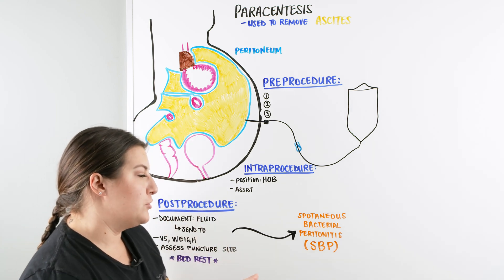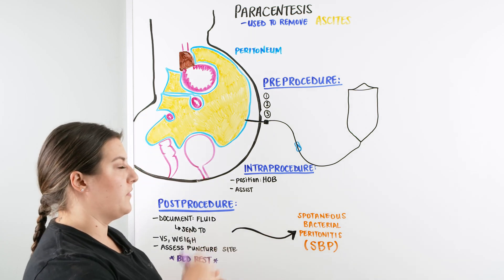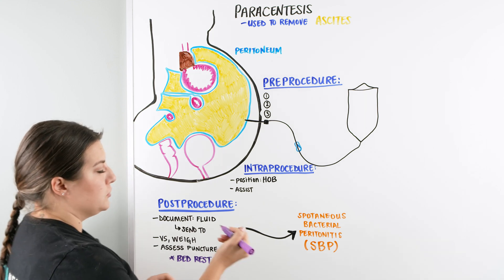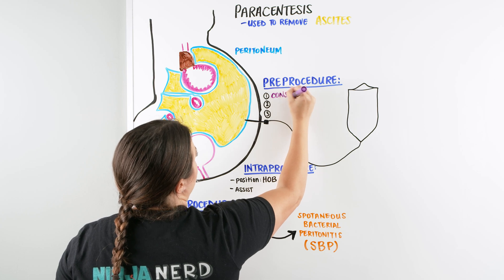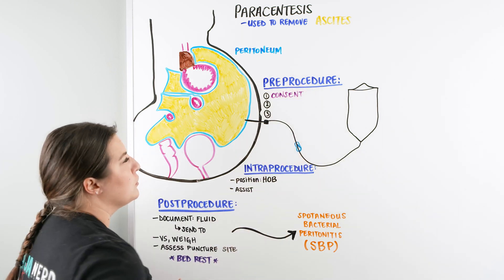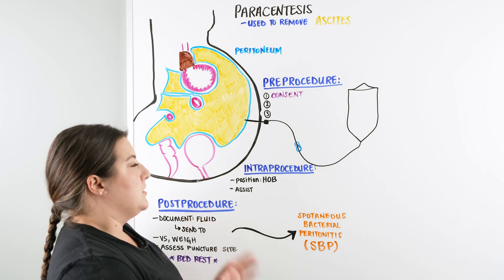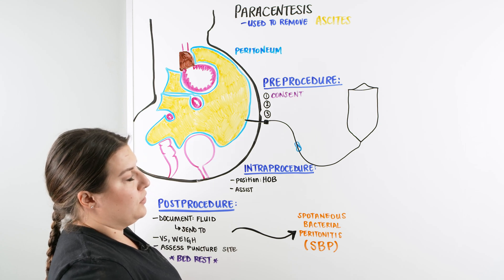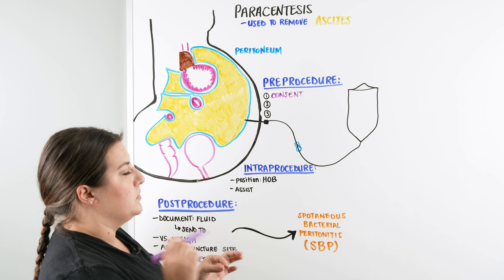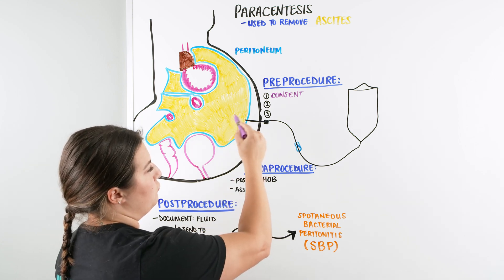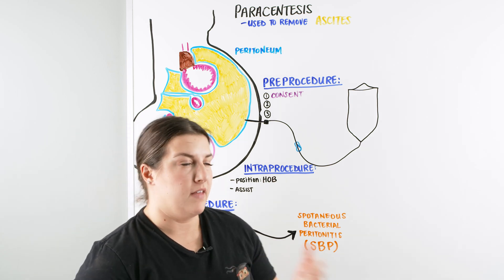You have a patient at bedside and we're going to talk them through getting the paracentesis. In the pre-procedure, we're going to make sure we have consent signed. The provider tells the patient how it's going to work: we'll have a sterile field, use ultrasound to locate the fluid cavity, and insert a needle to allow drainage of the ascites into a collection container. Once they agree, consent should be obtained.